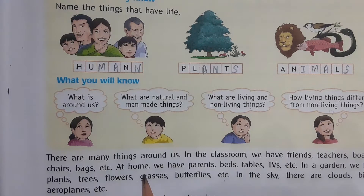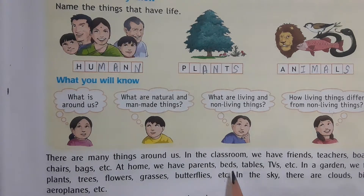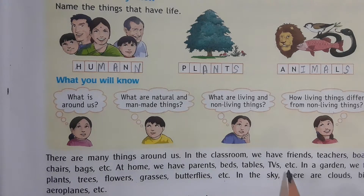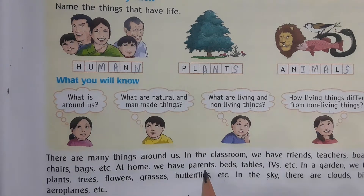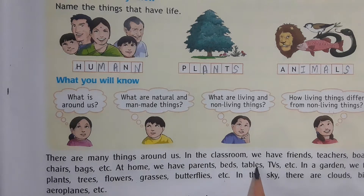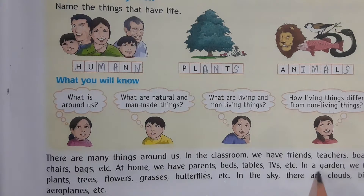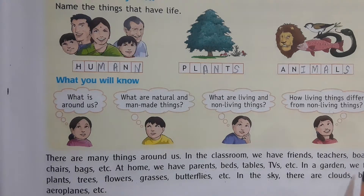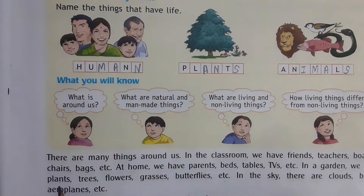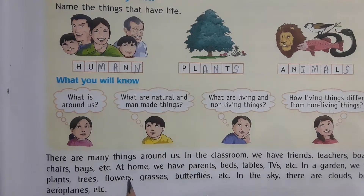At home we have parents, beds, tables, TVs, refrigerator, AC, etc. If we go to the garden, then we will see plants, trees, flowers, grasses, butterflies, etc. And in the sky there are clouds, birds, aeroplanes, etc.